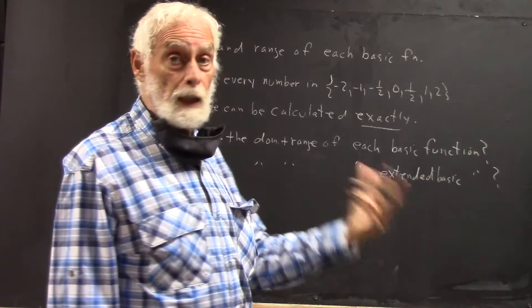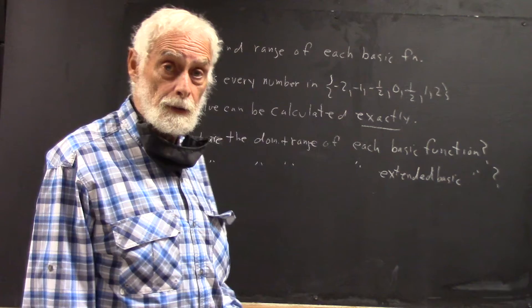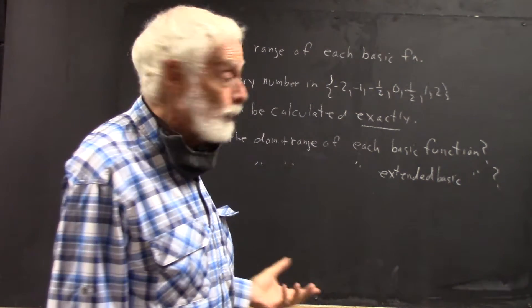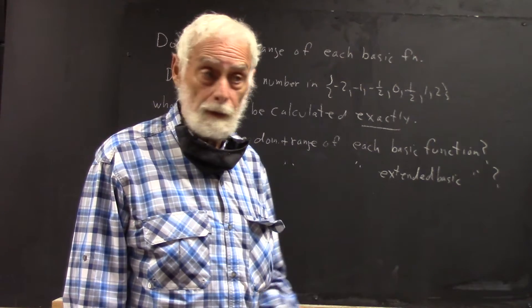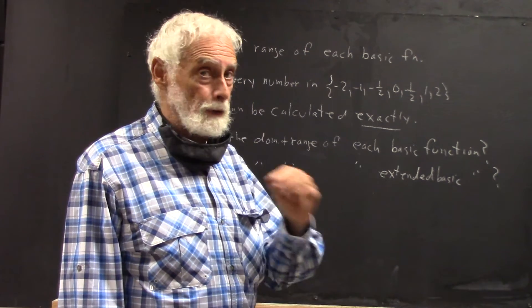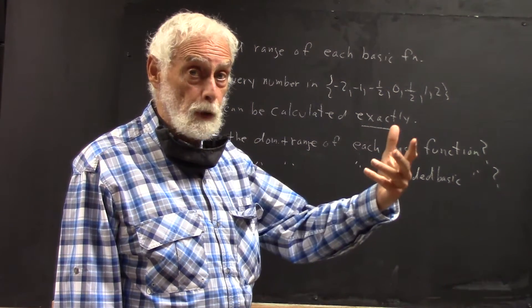You saw last time that the reciprocal square function can't be calculated at all if x is zero because division by zero is undefined. That's because you can use as many zeros as you want, you'll never get one.